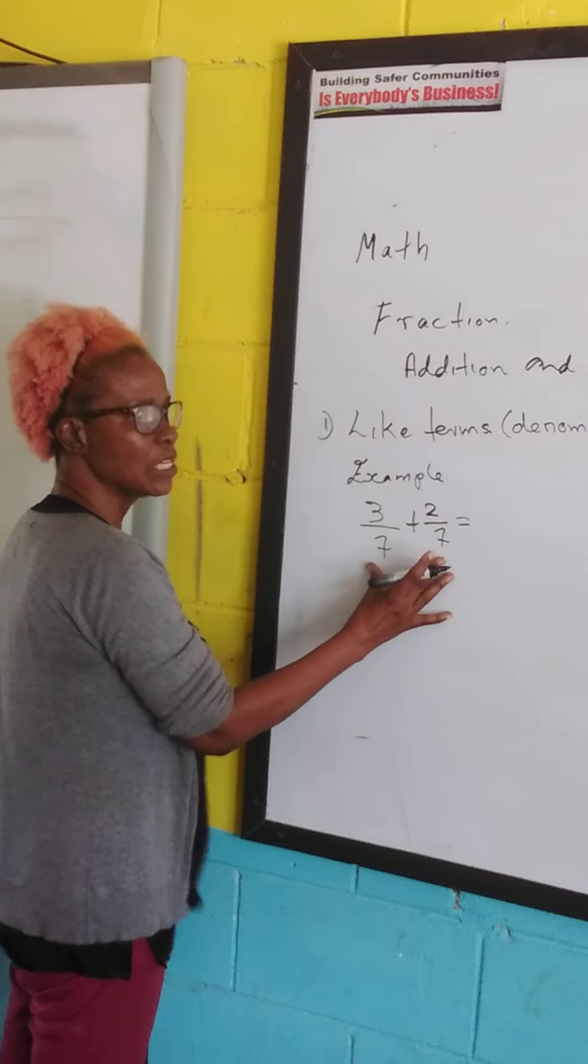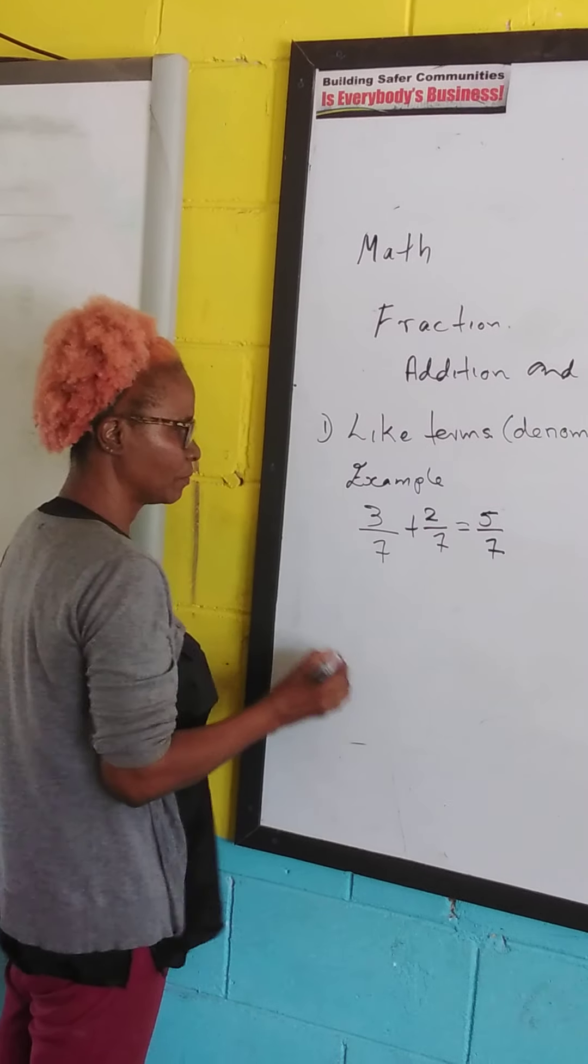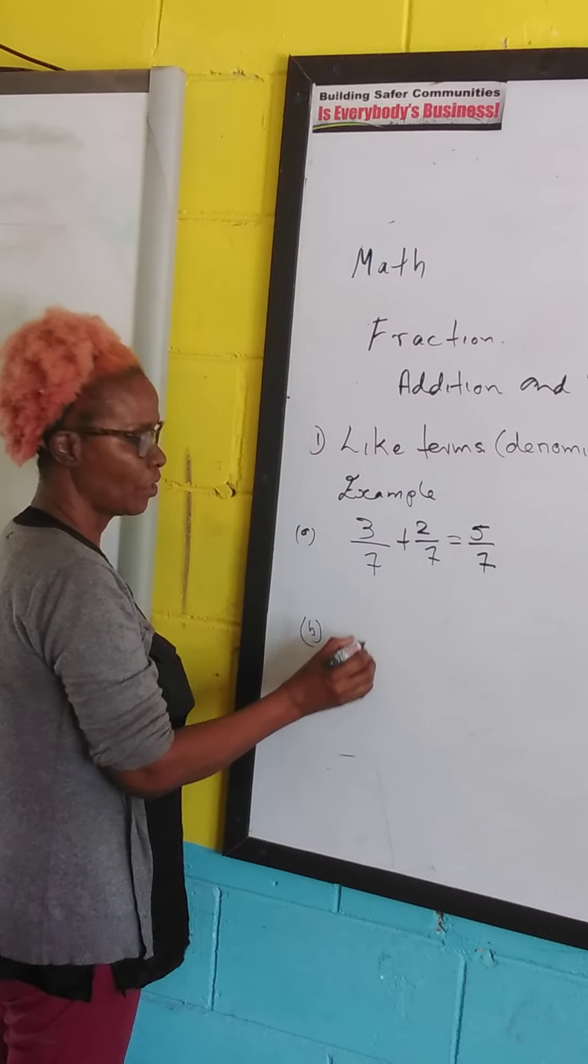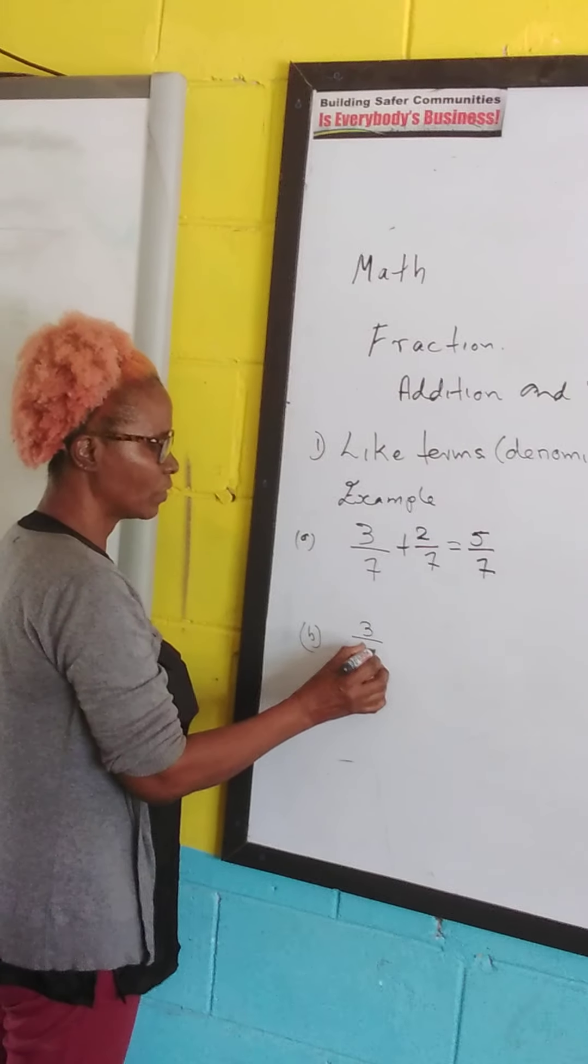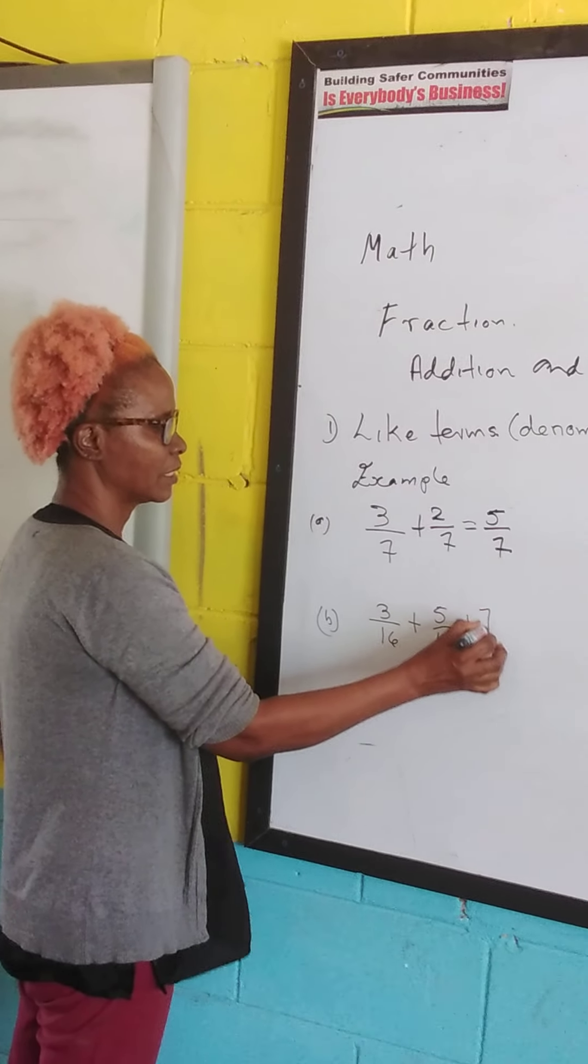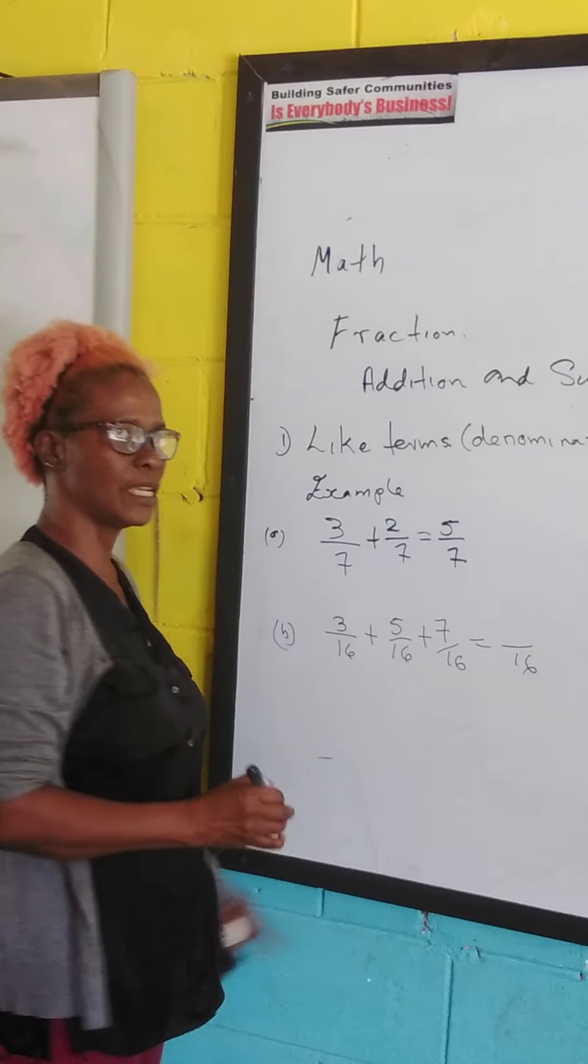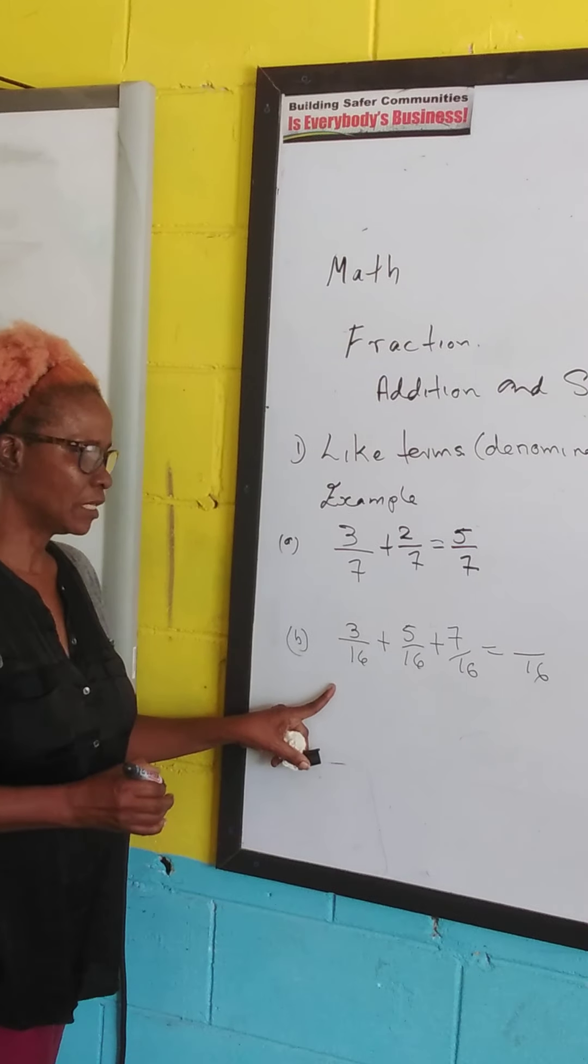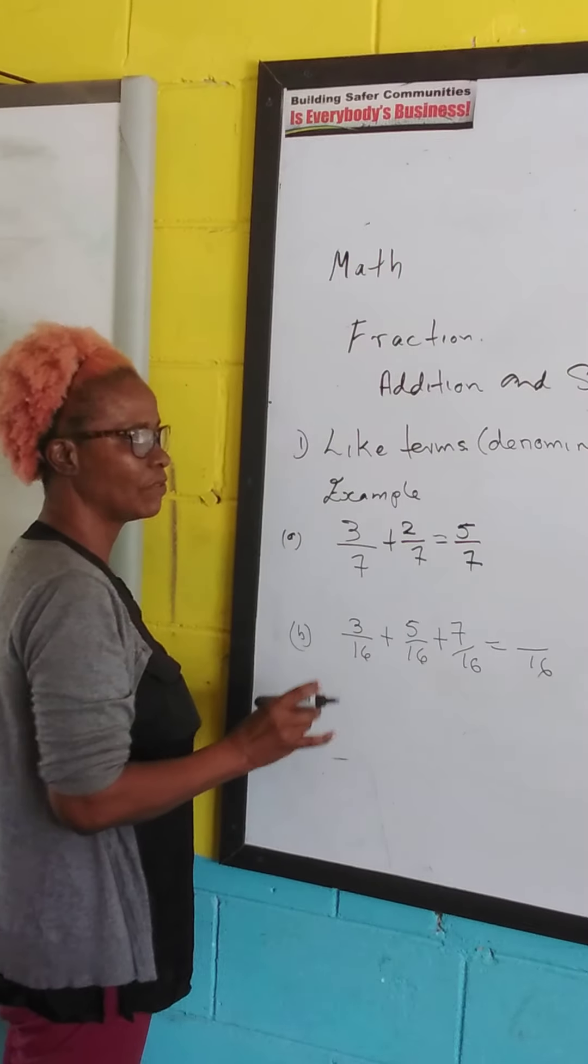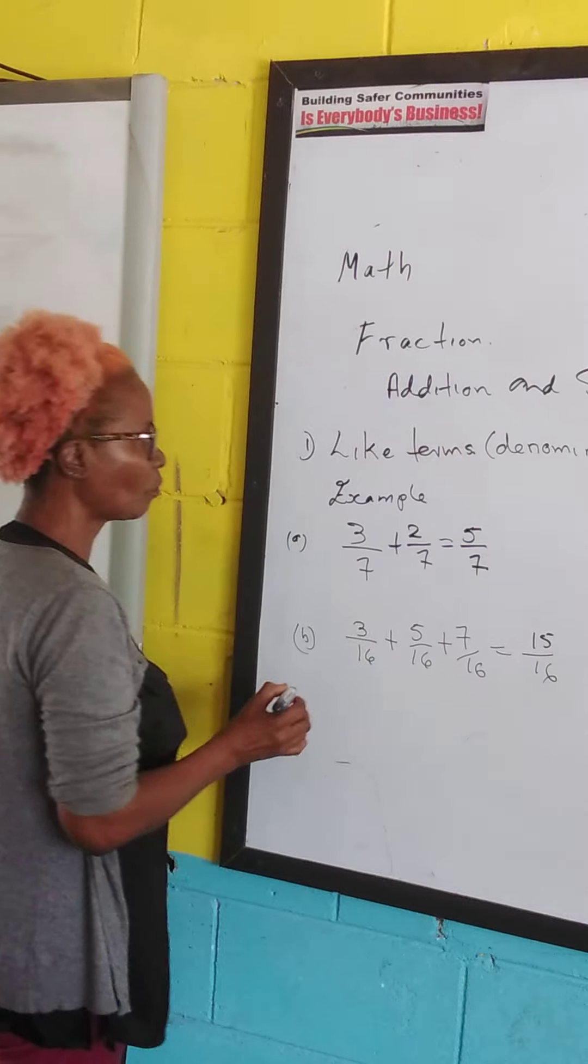we keep the denominator and add the numerator so we get 5 over 7. If we have 3 over 16 plus 5 over 16 plus 7 over 16, denominator is 16. So we keep the denominator and add the numerator. So we have 3 plus 5 is 8, 8 plus 7 is 15.